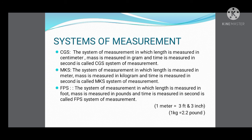Our next topic is systems of measurement — you have already studied this in lower classes. The first is the CGS system, in which length is measured in centimeter, mass in gram, and time in second. The second is the MKS system, in which length is measured in meter, mass in kilogram, and time in second. The third is the FPS system, in which length is measured in foot, mass in pounds, and time in second.